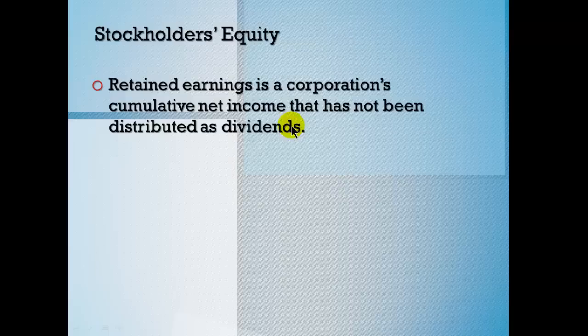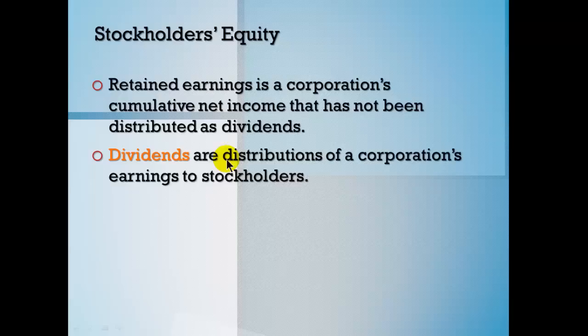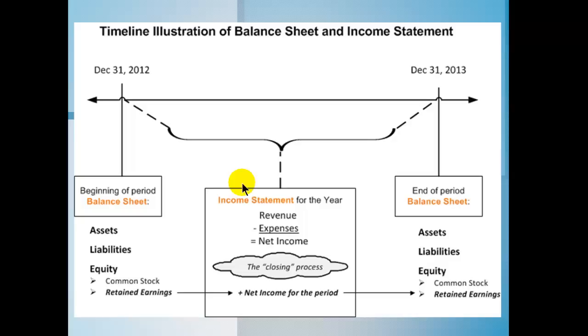Retained earnings is the cumulative net income that has not been distributed as dividends — cumulative since the start of the company. Dividends reduce retained earnings. They are distributions of earnings to stockholders. You can have cash dividends or stock dividends, where you increase the number of shares outstanding by giving additional shares to existing stockholders. On a timeline from one balance sheet to the next, net income or loss is closed out to retained earnings.